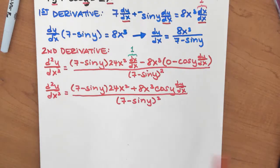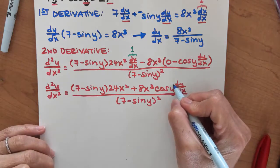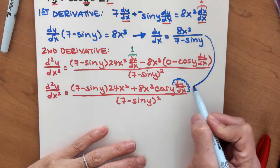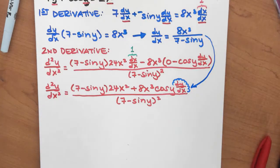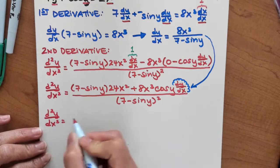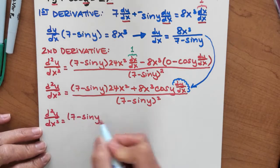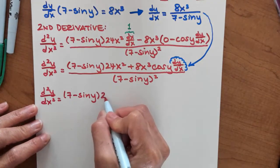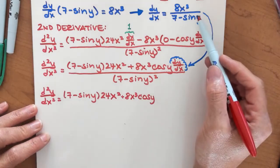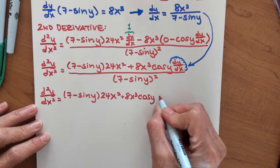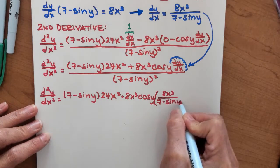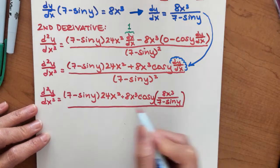We're almost done here. I just want to point out one more thing: I still have this dy/dx in the expression. I'm going to plug my first derivative right in there — I know what dy/dx is, I found it earlier. So my second derivative now becomes 7 minus sine y times 24x squared, plus 8x cubed cosine y times — here comes my first derivative going in for dy/dx — 8x cubed over 7 minus sine y. All of that over 7 minus sine y squared.